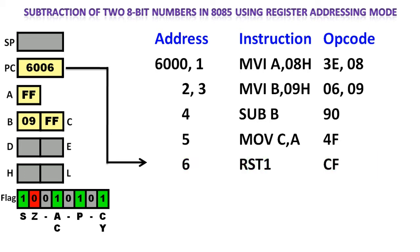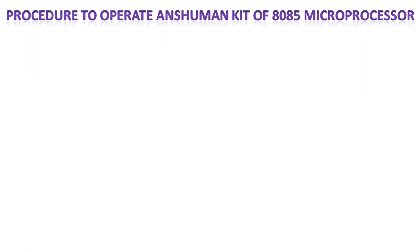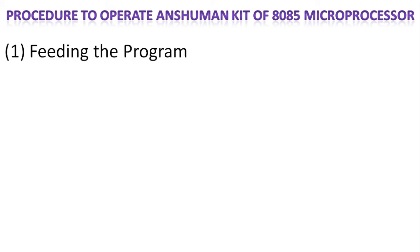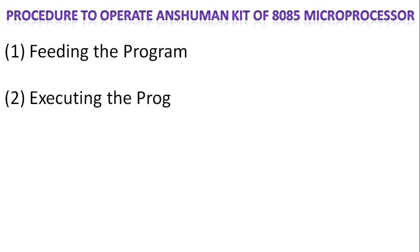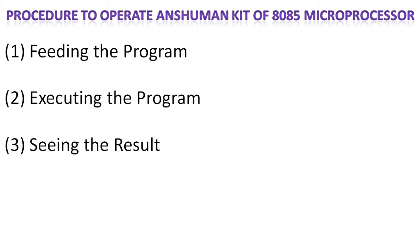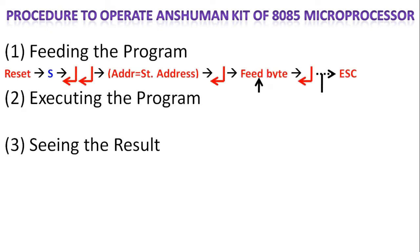Now let us see the actual process of how to execute this program on the Anshuman kit. The procedure to operate the Anshuman kit of the 8085 microprocessor has 3 processes: feeding the program, executing the program, and seeing the result. For feeding the program, first we have to press the reset key which is available on the right bottom corner of the kit. There is a red key there.